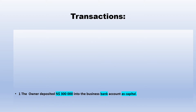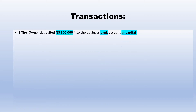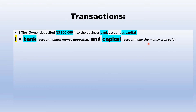Let's look at some transactions and indicate the effect on the accounting equation. The first transaction: the owner deposited 300,000 into the business bank account as capital. Using the ICE method, we first identify the two accounts involved: bank — because that is how the money was deposited — and capital — because that is the owner's contribution to the business.